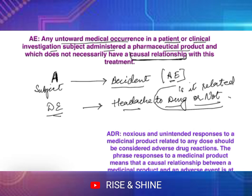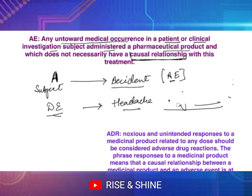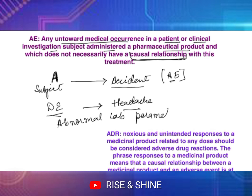Another example: even abnormal lab values — suppose there is a change in some laboratory parameter — that will also be considered an adverse event. So an abnormal lab parameter, a change in some value, will also be considered an adverse event, no matter whether it is related to the drug or not. The main point is: regardless of drug relationship, it is considered an event.